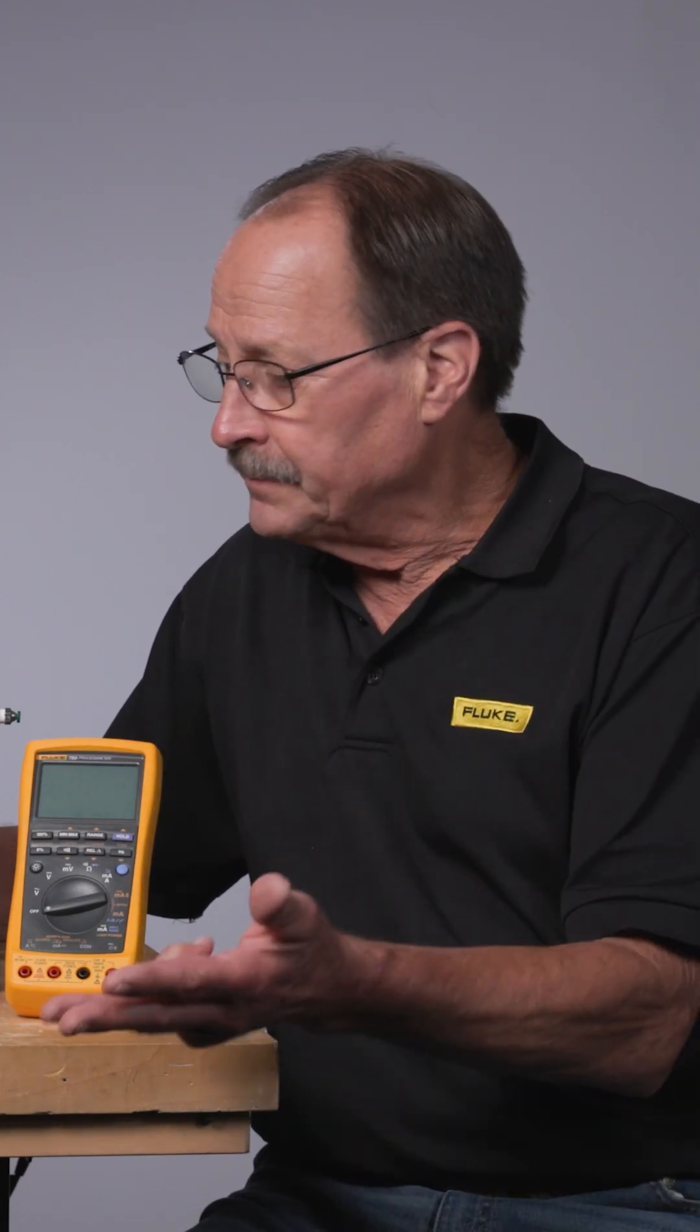So in addition to temperature, pressure, milliamps, and control valves, there's also the control system I/O for verifying the direct inputs in the control system. Of course, you use a loop calibrator for that.